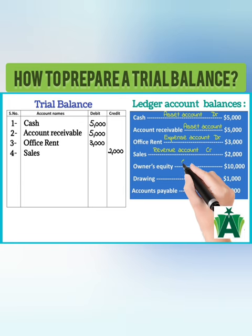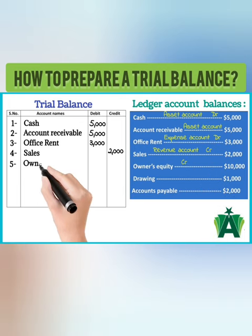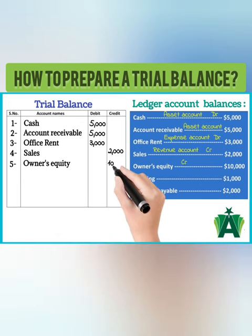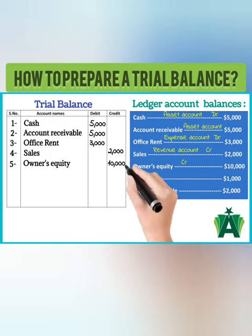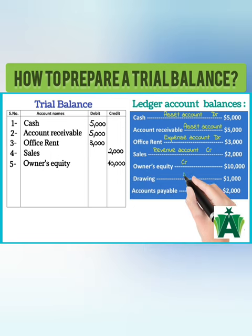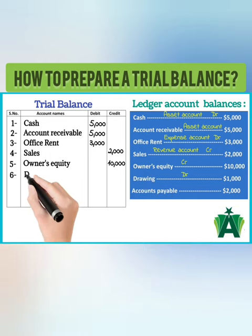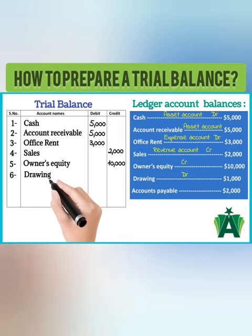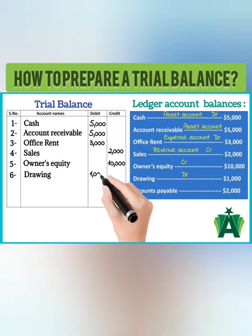The normal balance of the owner's equity is a credit balance; it is recorded in the credit column of a trial balance. The normal balance of a drawing account is a debit balance; it is recorded in the debit column of a trial balance.